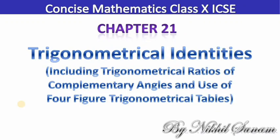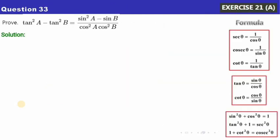Welcome back, dear students. We are doing Chapter 21, Trigonometrical Identities, and we are dealing with the first exercise, that is Exercise 21A. In today's class, we'll try to cover this exercise, but I will not be covering all the sums — I will cover only a few, and the rest of the problems should be done by you.